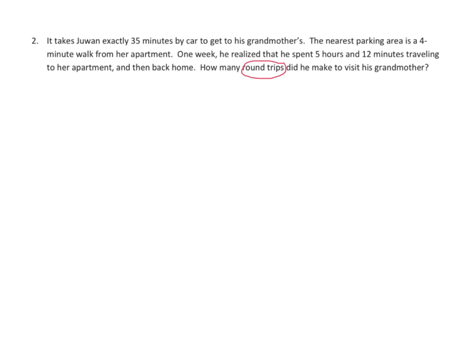We have to figure out how much one trip takes, and then we have to figure out how much a round trip takes. Let's look at the first part of the problem. It takes Juwan exactly 35 minutes by car to get to his grandmother's. The nearest parking area is a 4-minute walk from her apartment. Let's represent that in a tape diagram. We have 35, and then 4. But since it's a round trip, we're going to have that twice. 35 plus 4. This is the round trip in minutes. We don't know what that is, and I'm going to let you figure that out.